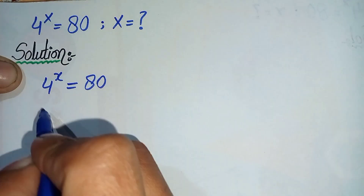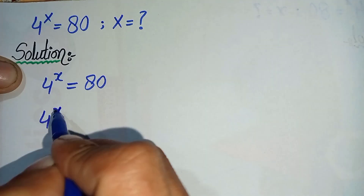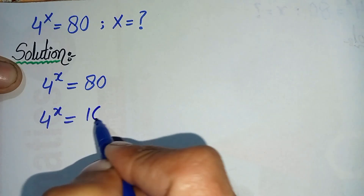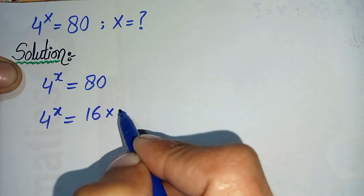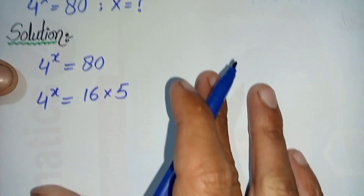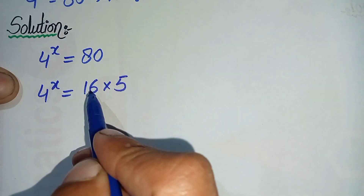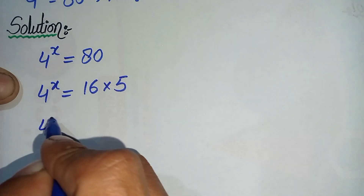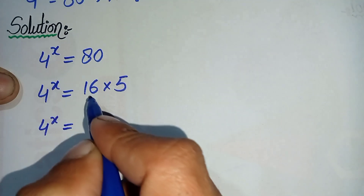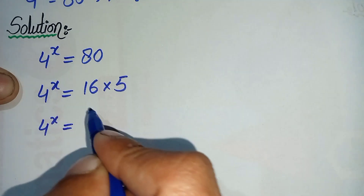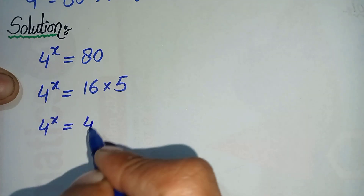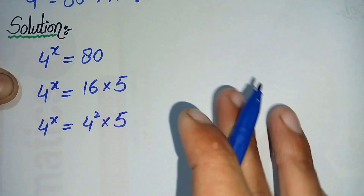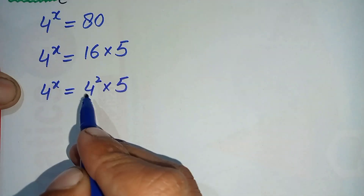First we will factorize 80. The left-hand side remains 4 raised to power x, and we can write 80 as 16 times 5. We then change 16 into index form: 16 is 4 squared, so the right-hand side becomes 4 squared times 5.